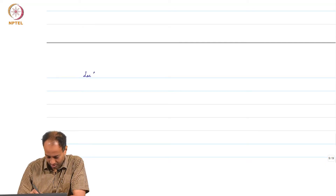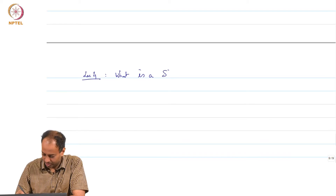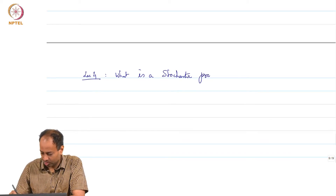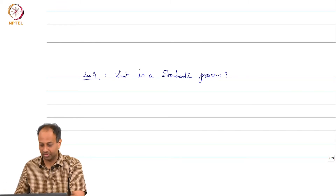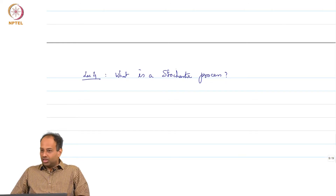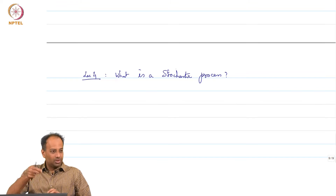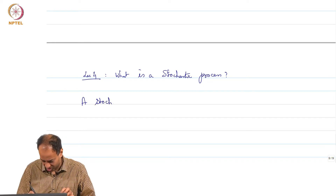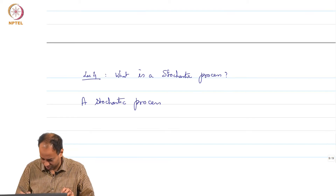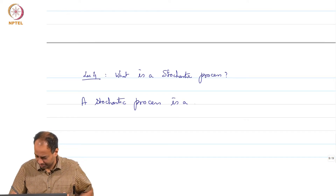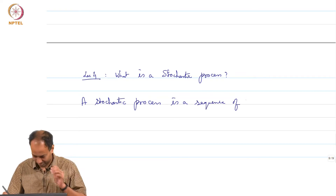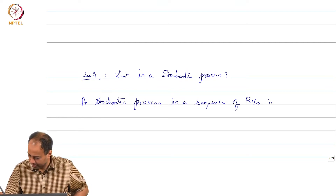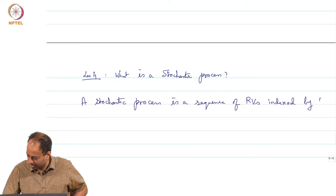What is a stochastic process? A stochastic process is nothing but a sequence of random variables where the index of the sequence has the interpretation of time. So, a stochastic process is a sequence of random variables indexed by time.